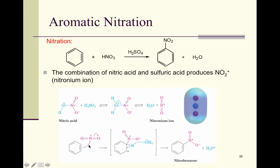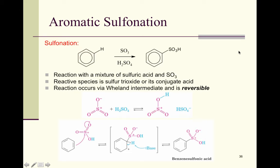In the mechanism itself, it's the nitronium ion that the pi electrons attack — here's our Wheland intermediate. NO2 is on the ring, and water — which was given off in the earlier step — comes in, grabs that hydrogen, and the pair of electrons holding this hydrogen forms the carbon-carbon double bond, reinstating the aromatic system.